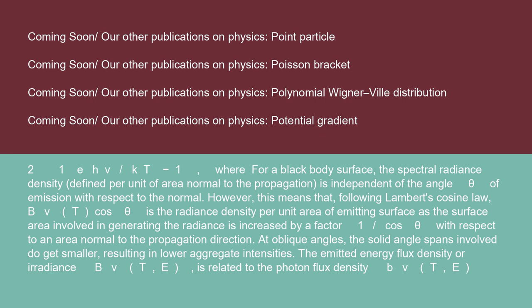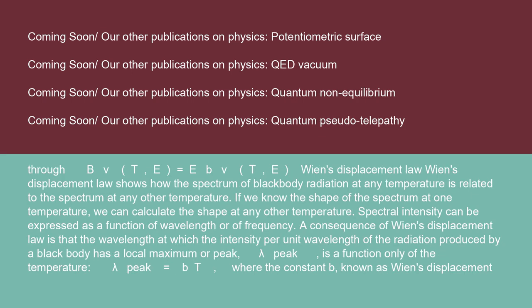The emitted energy flux density, or irradiance B(ν,T,e), is related to the photon flux density B(ν,T,e) through B(ν,T,e) = E · B(ν,T,e).